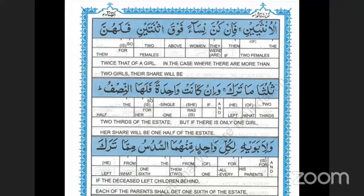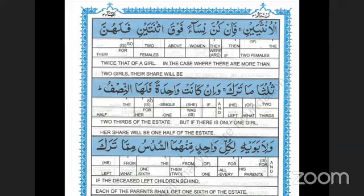Wa in kanat wahidatan — and if she was a single one. Falaha an-nisf — so for her is the half. Wali abawayhi — and for his parents. Likulli wahidin minhuma as-sudusu — for every one of them the one-sixth. Mimma taraqa — from what he left. In kana lahu waladun — if he had a child. Fa in lam yakun lahu waladun — then if he did not have a child. Wa warithahu abawahu — and his parents inherited him.